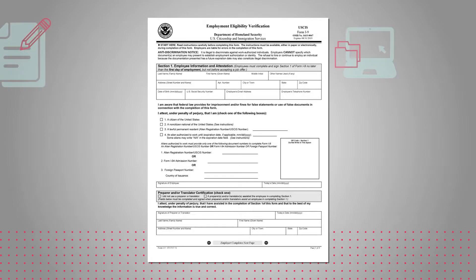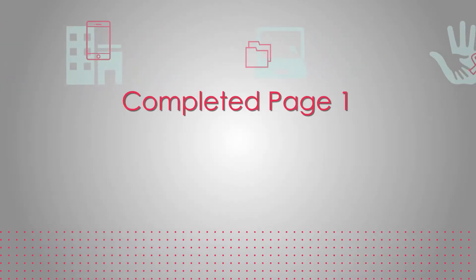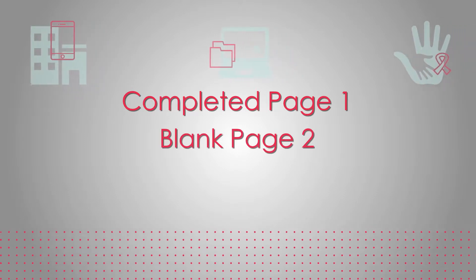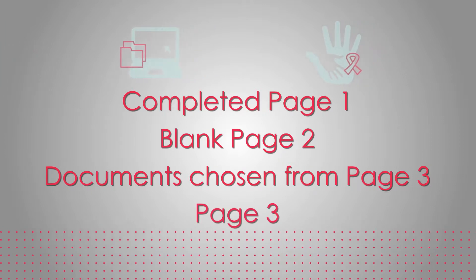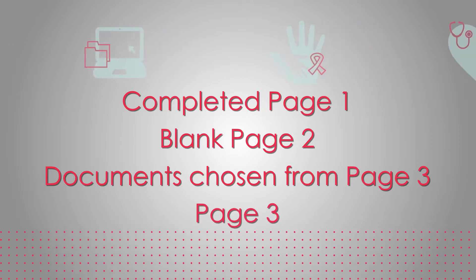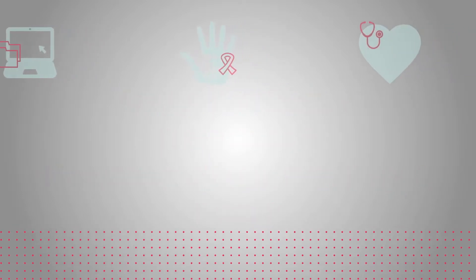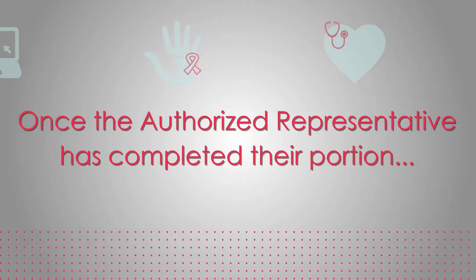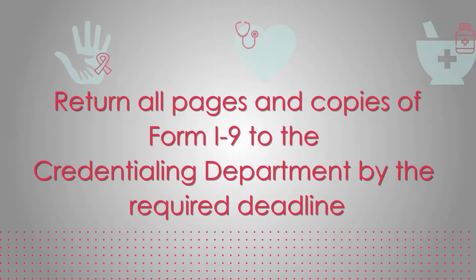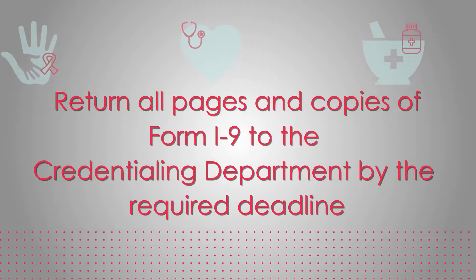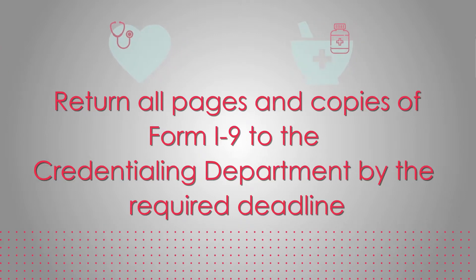Your job is done for now. Do not complete any portion of page 2. Present the completed page 1, the blank page 2 as provided by your employer, your documents chosen from the list on page 3, and page 3 as a reference to the authorized representative whom you have selected, so that he or she can complete the Form I-9 on our behalf. Once the authorized representative has completed their portion, be sure to return the entire Form I-9 along with copies of the identification and employment authorization documents to the credentialing department.